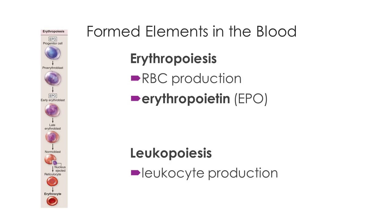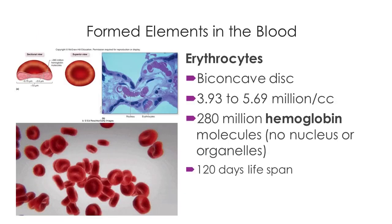These are all the different cell lineages. You can see the basophil right there, with the mast cell — it's the same cell, just locational. Monocyte is in the circulation, macrophage is outside the circulation. Erythrocytes are red blood cells. And we have the biconcave disc shape.